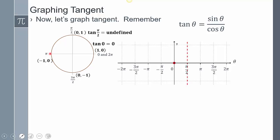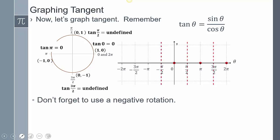Then here, 0 over negative 1 — dot. And then negative 1 over 0 — asymptote. And then 0 over 1 — there's a dot. You can do negative rotation too. Negative pi halves is also undefined. Negative pi is going to be 0. Negative 3 pi halves is going to be undefined. And then negative 2 pi is back to a dot.